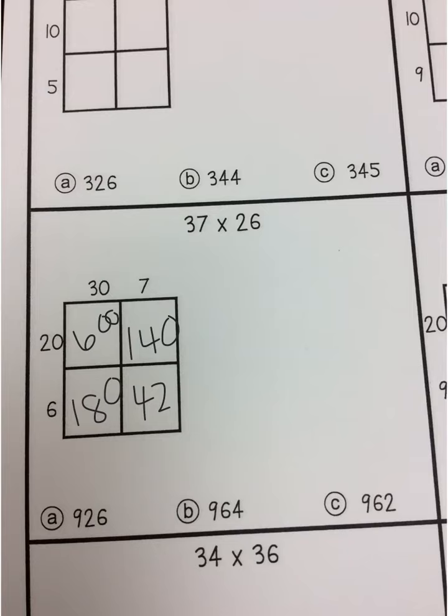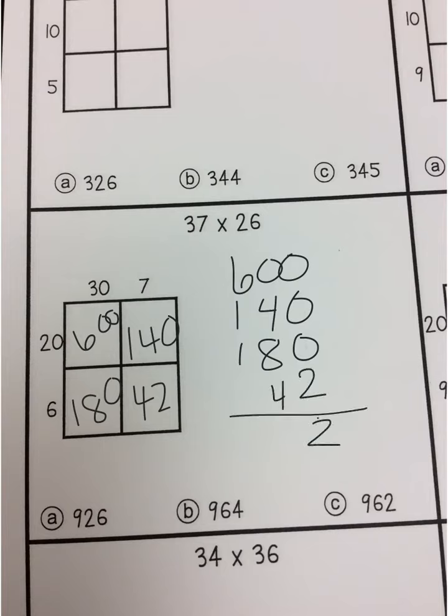So once I've found all those numbers, and hopefully you have figured out the pattern I'm going through, it's very simple once you get through that pattern. Now we're going to go ahead and add everything together. So 600, 140, 180, and 42. So 0, 0, 0 plus 2 is 2.